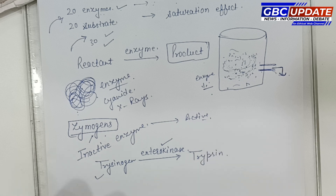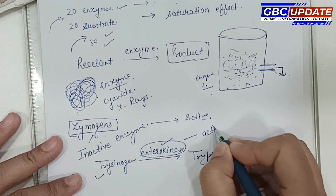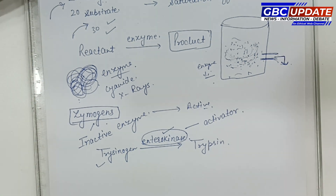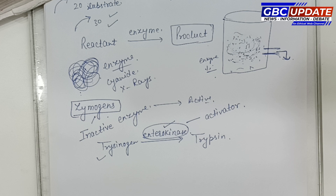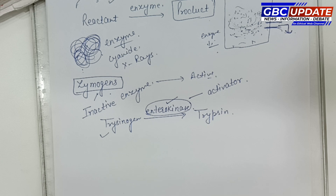The enzyme enterokinase, which activates trypsinogen into trypsin, is called an activator. To summarize the NCERT factors: temperature, pH, change in substrate concentration, and binding of specific chemicals that regulate enzyme activity. We will now study that fourth factor.